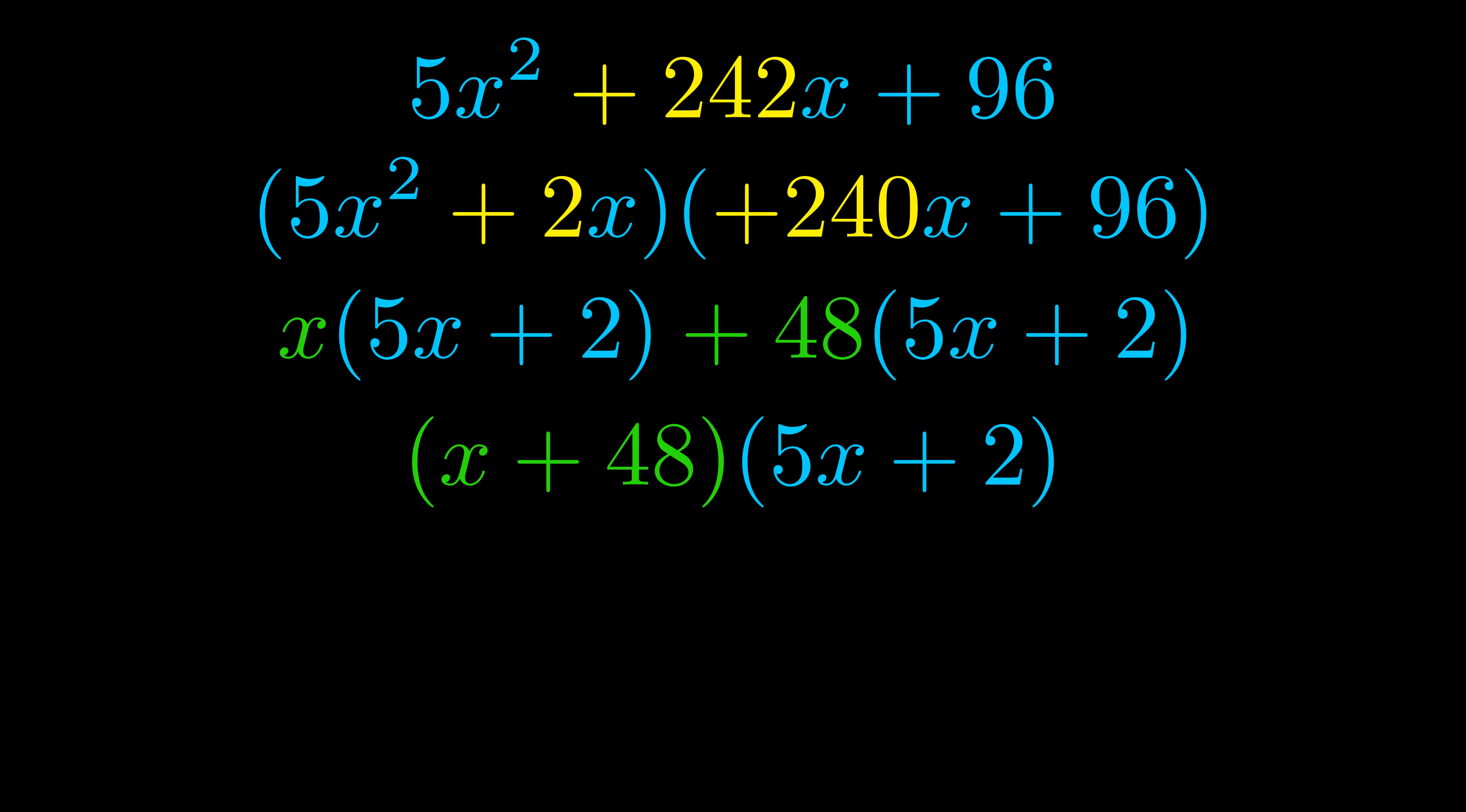The blue values are the same. Those blue values will become one of our factors and we will combine the two green values, the GCFs that we pulled out, to get the other one. And that is our fully factored equation.